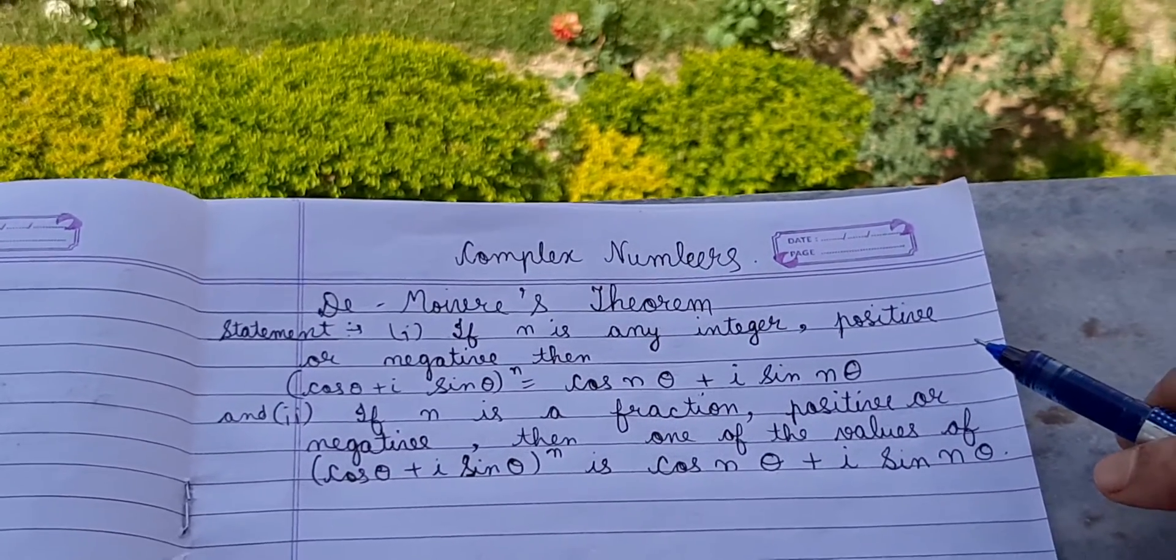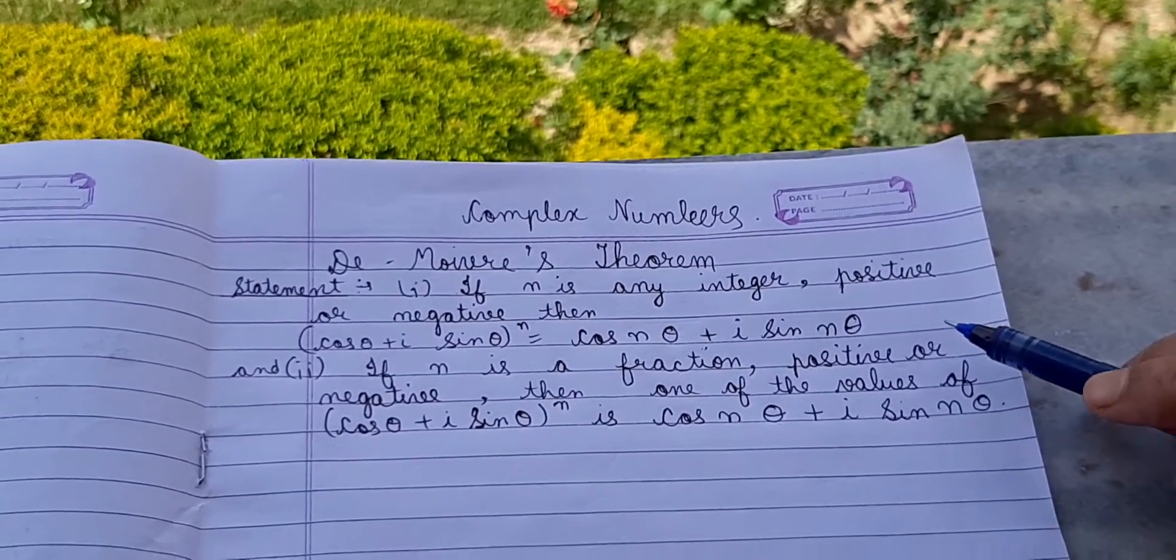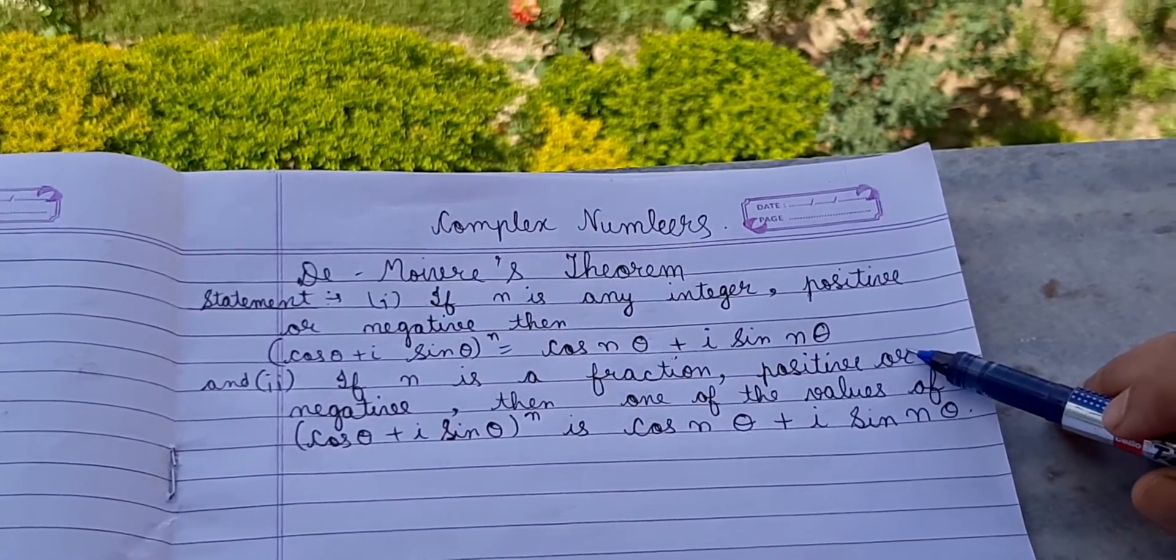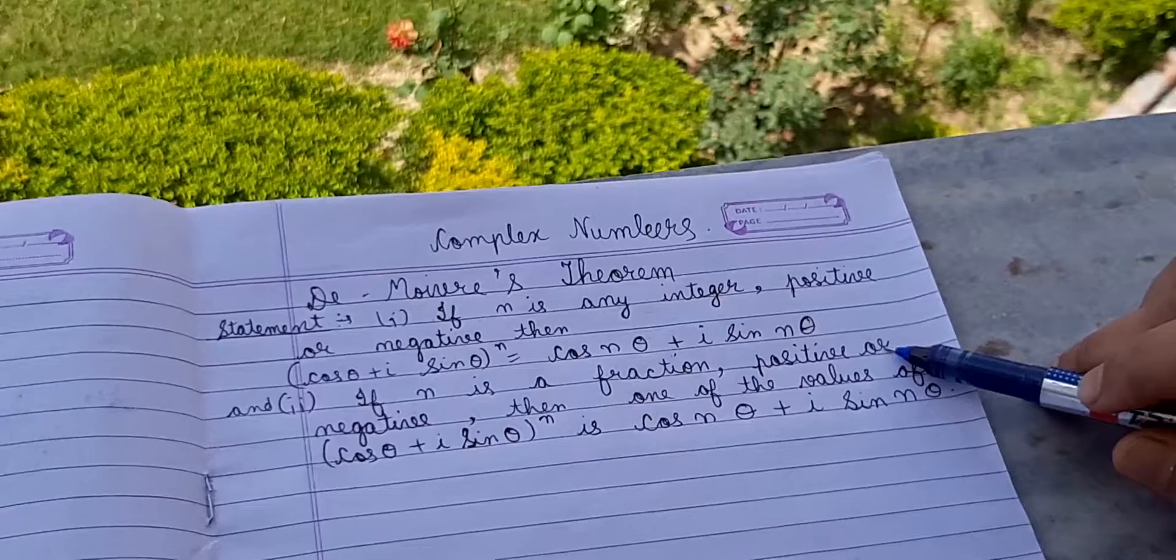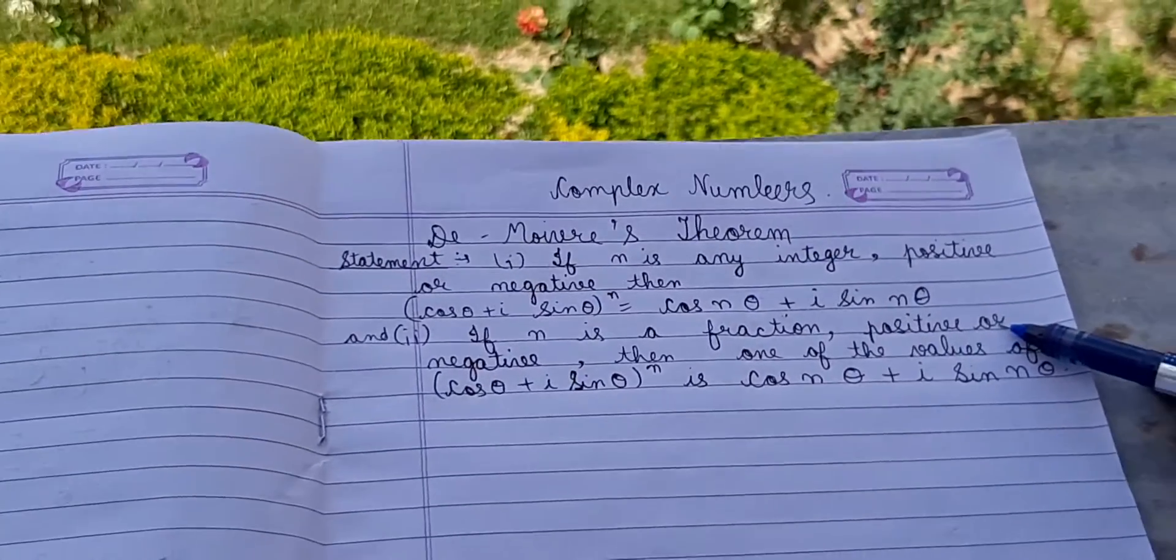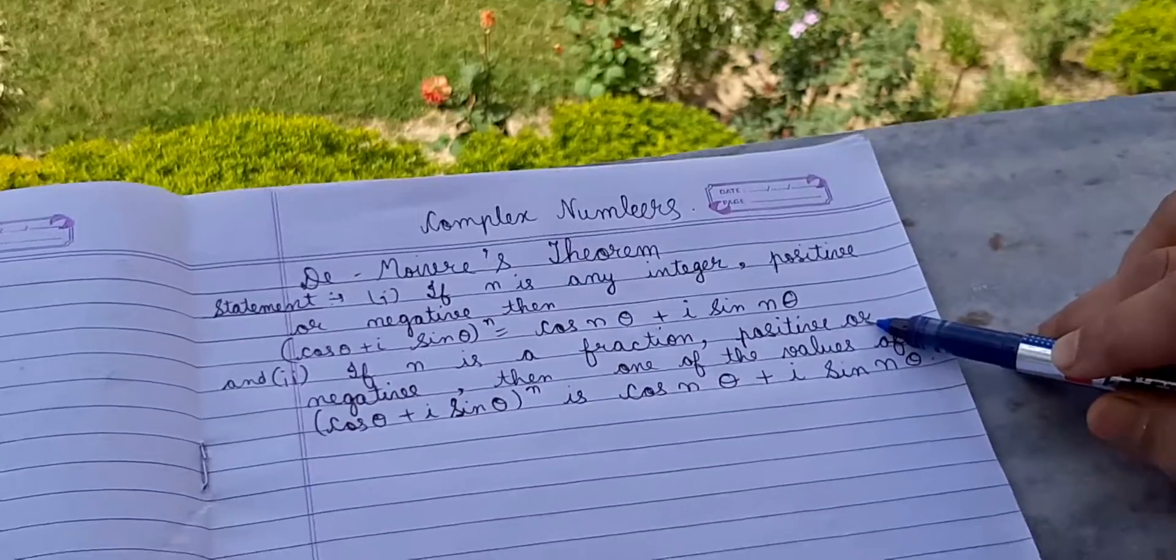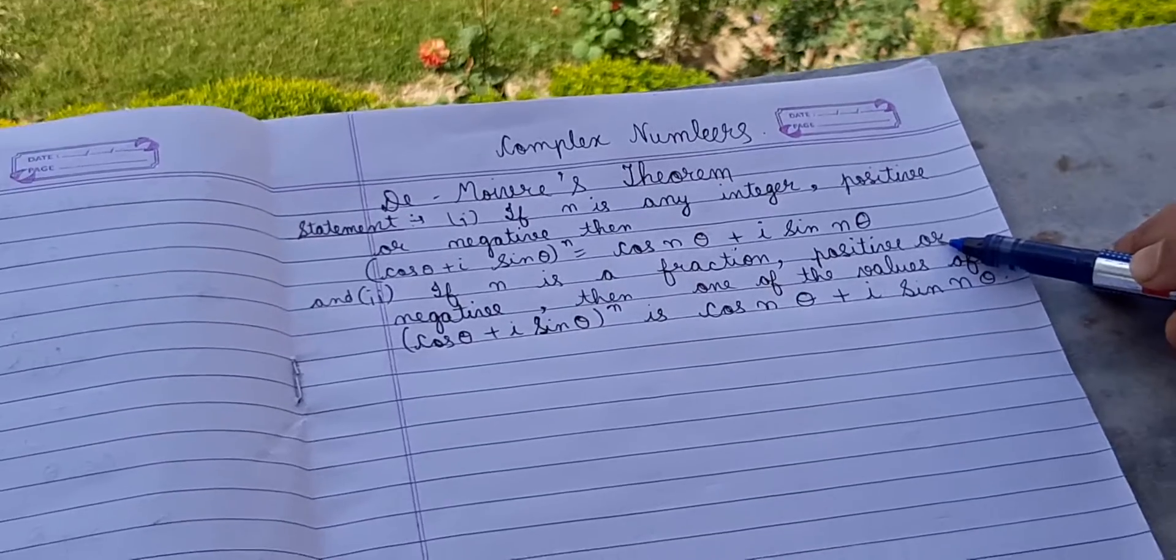The last unit is complex numbers. I hope that you all know about complex numbers—that is, numbers of the form a plus iota b, where a is the real part and b is the imaginary part.